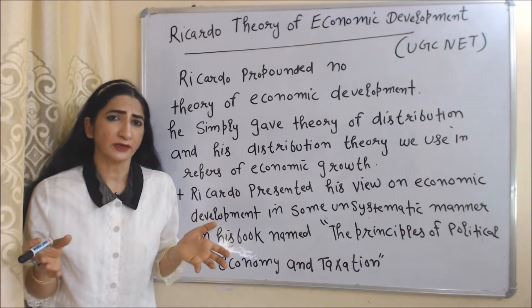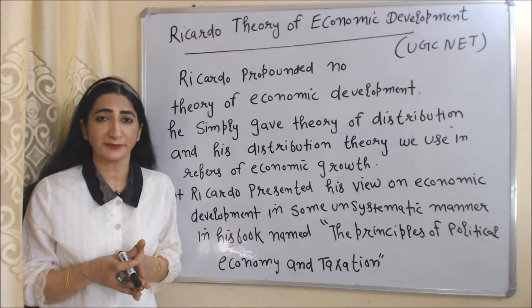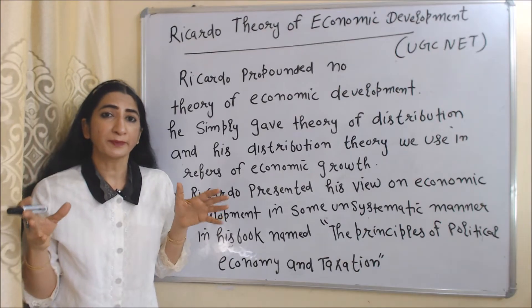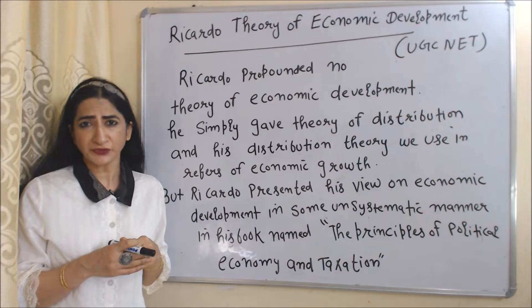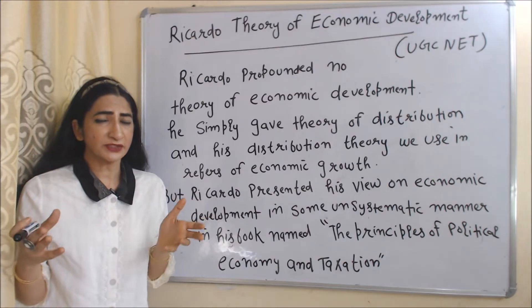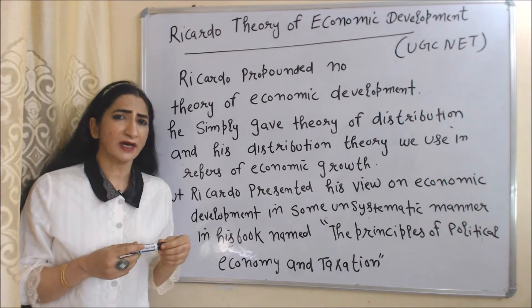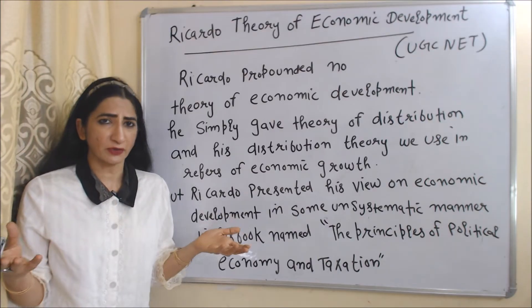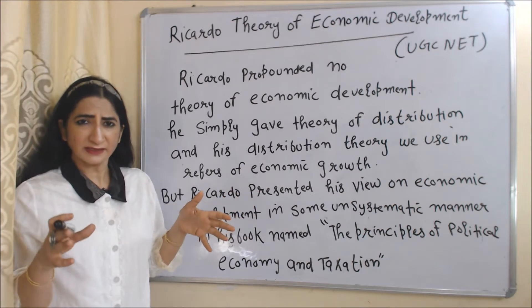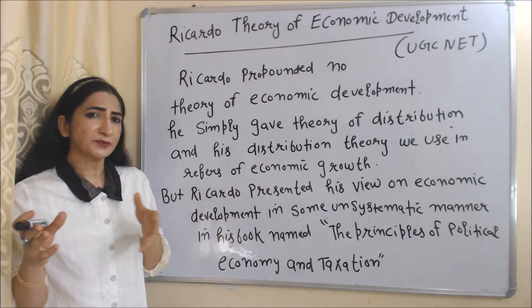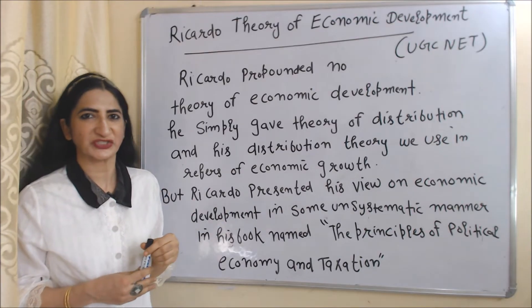First of all, Ricardo propounded no theory of economic development — this is absolutely true. He gave a theory of distribution, and we use his distribution theory in reference to economic development. That doesn't mean Ricardo never gave his view about economic development. He presented his view on economic development in some unsystematic manner in his book named 'The Principles of Political Economy and Taxation.'